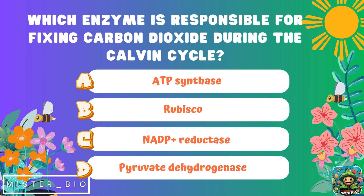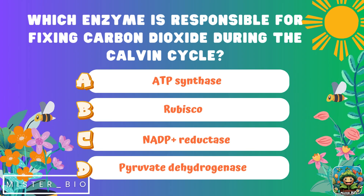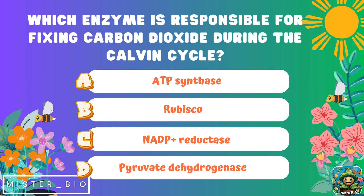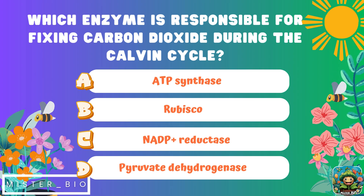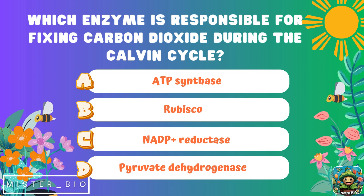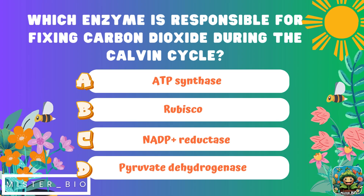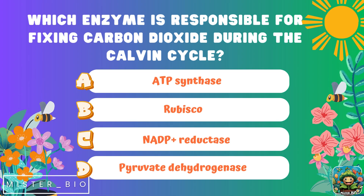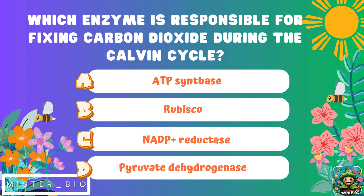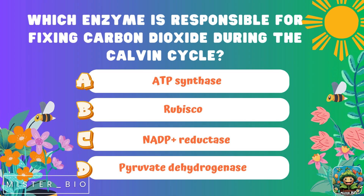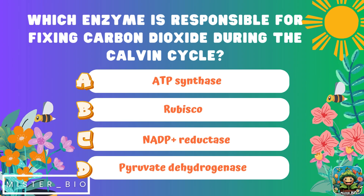Next question: which enzyme is responsible for fixing carbon dioxide during the Calvin cycle? A) ATP synthase, B) RuBisCO, C) NADPH reductase, or D) pyruvate dehydrogenase.